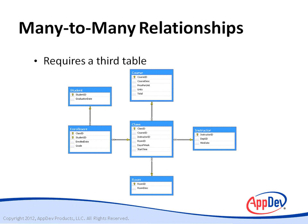So 'multiple' might be a better term, but 'many' is widely used. Consider also that each course may be taught at different times during the week, by different instructors, and in different rooms. So the class table represents several many-to-many relationships between courses, instructors, and rooms, as shown in the figure.